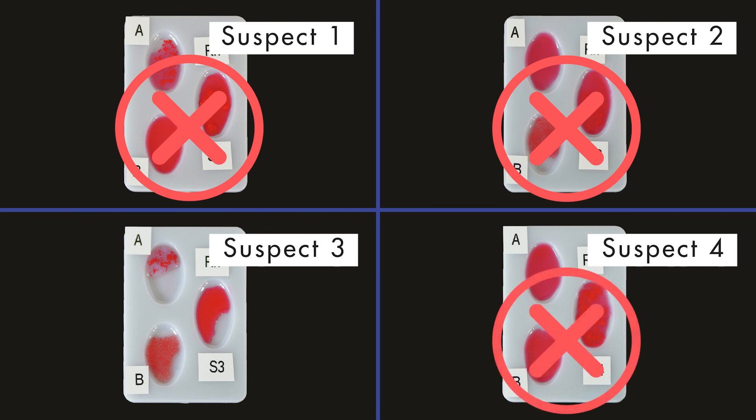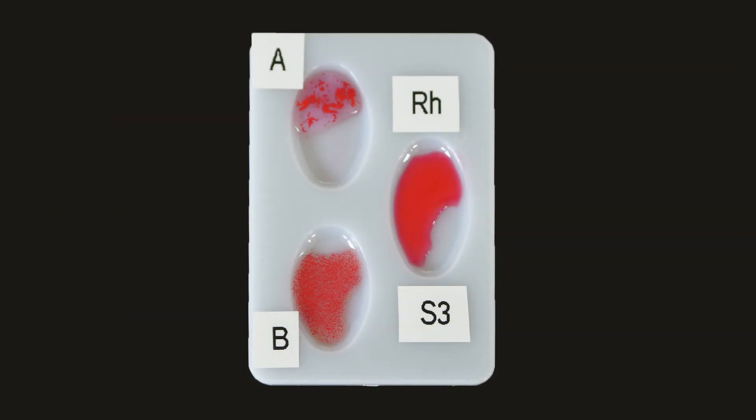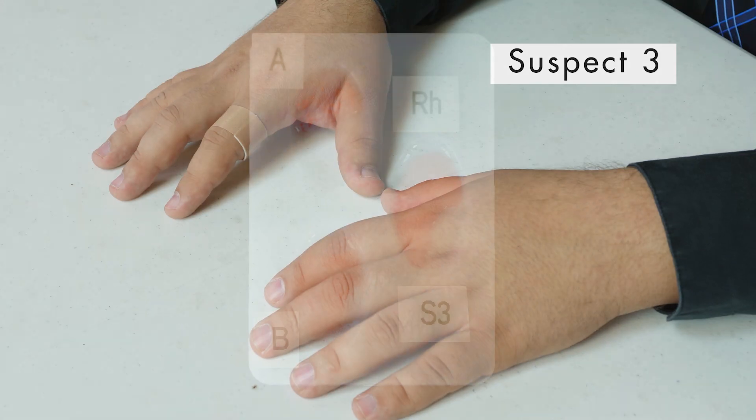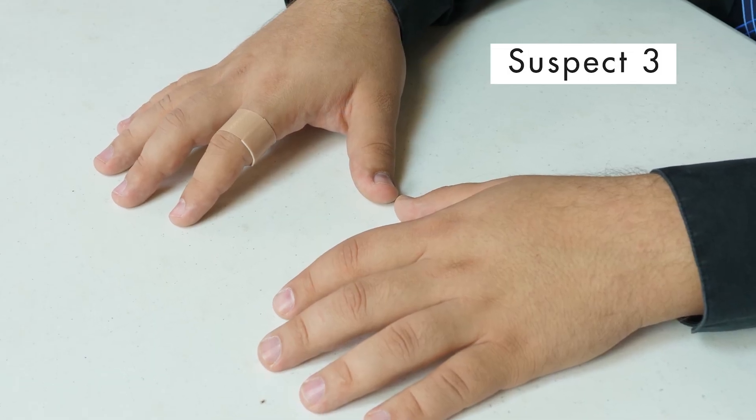The fact that the blood of the other three suspects does not match the blood found in the lunchroom is evidence that they are not the ones who cut themselves on the broken water glass. When confronted with the results of the blood test, suspect 3 confessed to taking the sandwich. By using blood typing, we were able to solve the mystery of the missing sandwich. In our next lab, we will look at a demonstration of how our lungs work. At this time, proceed with the corresponding activities.